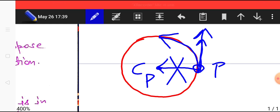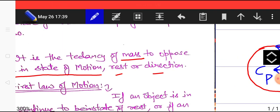If that force is not there the object will continue to move in tangential direction. That is known as inertia of direction.